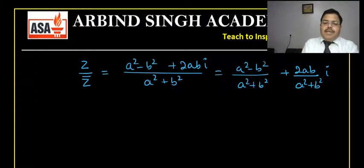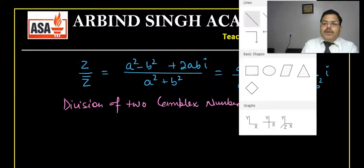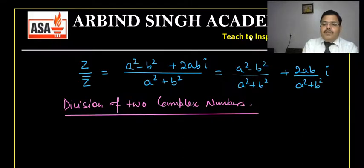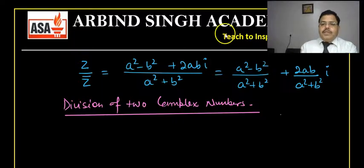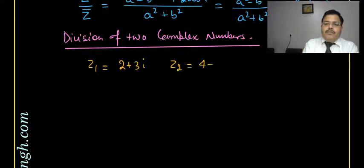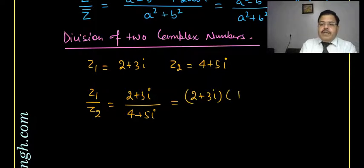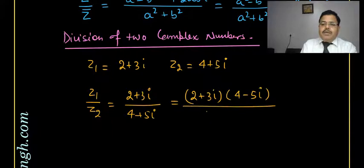This gives the concept of division of two complex numbers. Whenever we divide two complex numbers, we multiply by the conjugate of the denominator. Suppose z1 equals 2 plus 3 iota and z2 equals 4 plus 5 iota. If we want z1 divided by z2, that is (2 plus 3 iota) divided by (4 plus 5 iota), we multiply by conjugate of denominator: 4 minus 5 iota over 4 minus 5 iota.